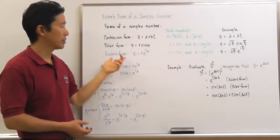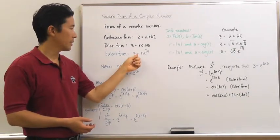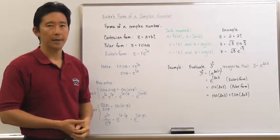Euler's form is the new form that we're going to introduce today, and that's going to be z is equal to R e to the i theta.